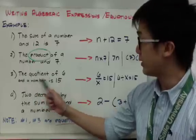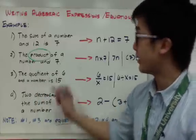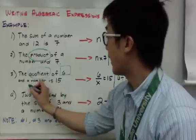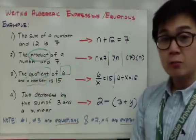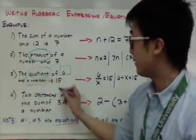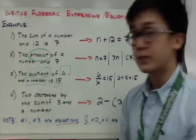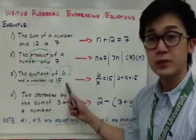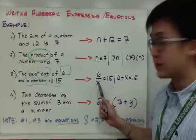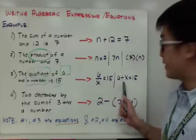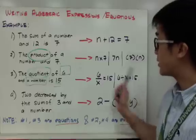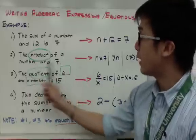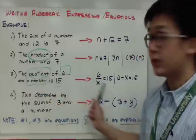For number three: the quotient of 6 and a number is 15. The keyword is quotient, we have the number 6, and a variable representing any letter of the alphabet equals 15. Written in numerical form, this becomes 6 over x equal to 15, or 6 divided by x equal to 15. There are several ways to write this out — you can use a fraction or the division symbol.